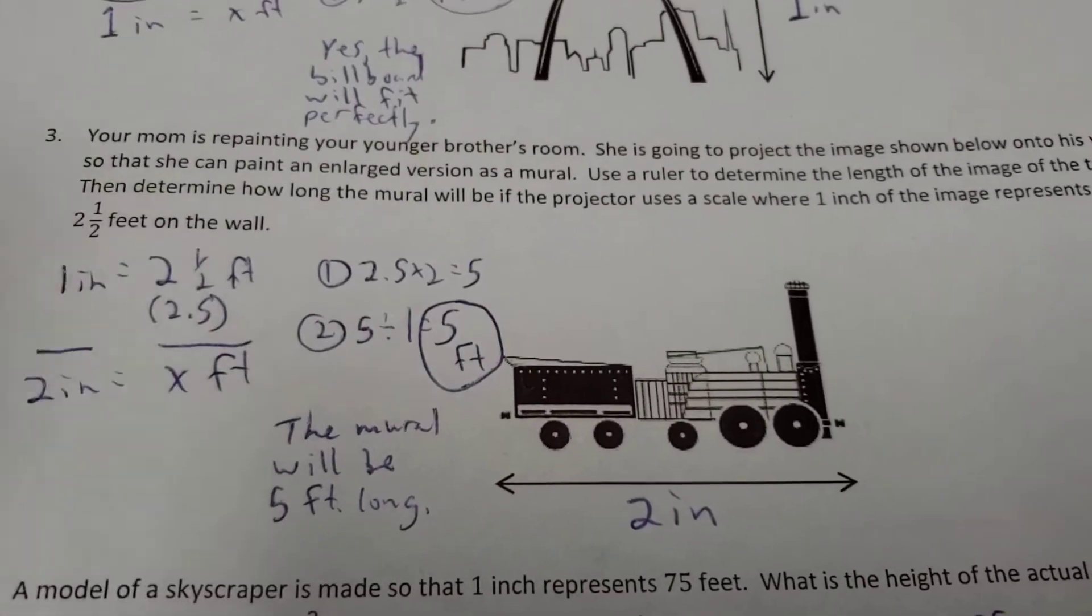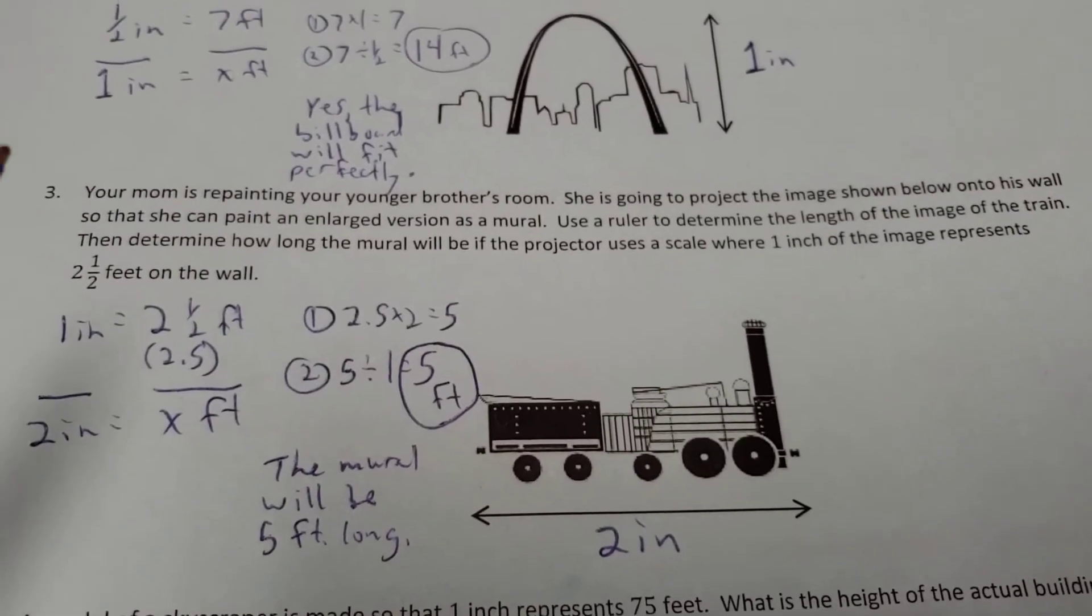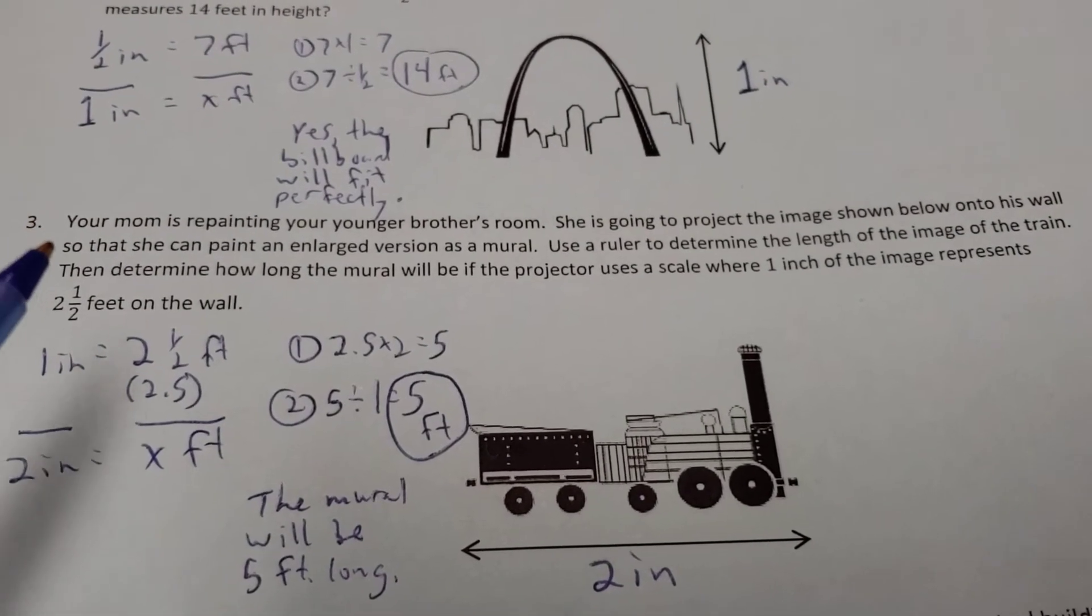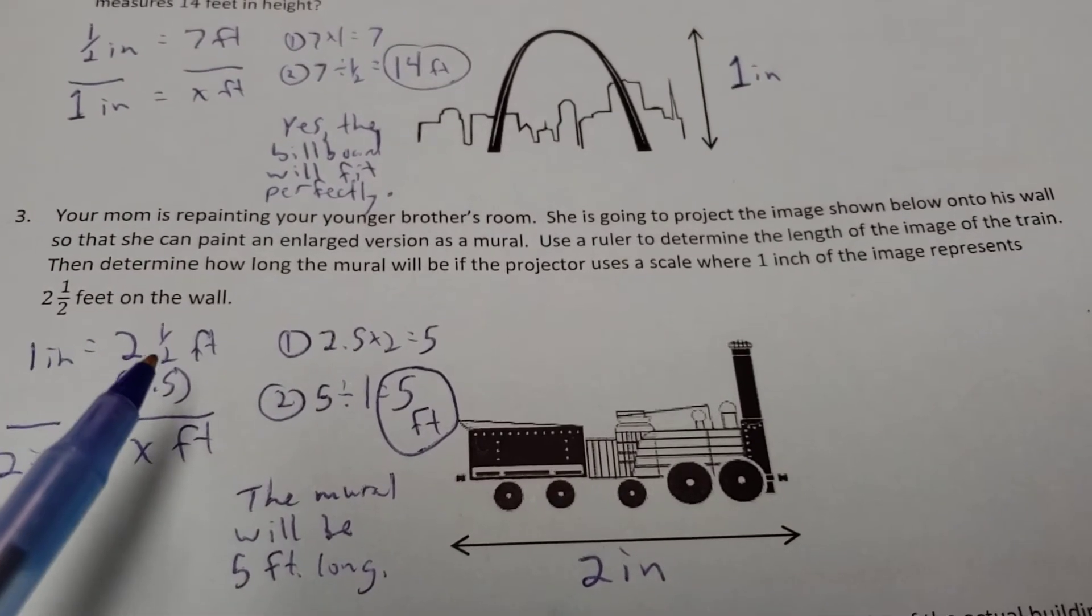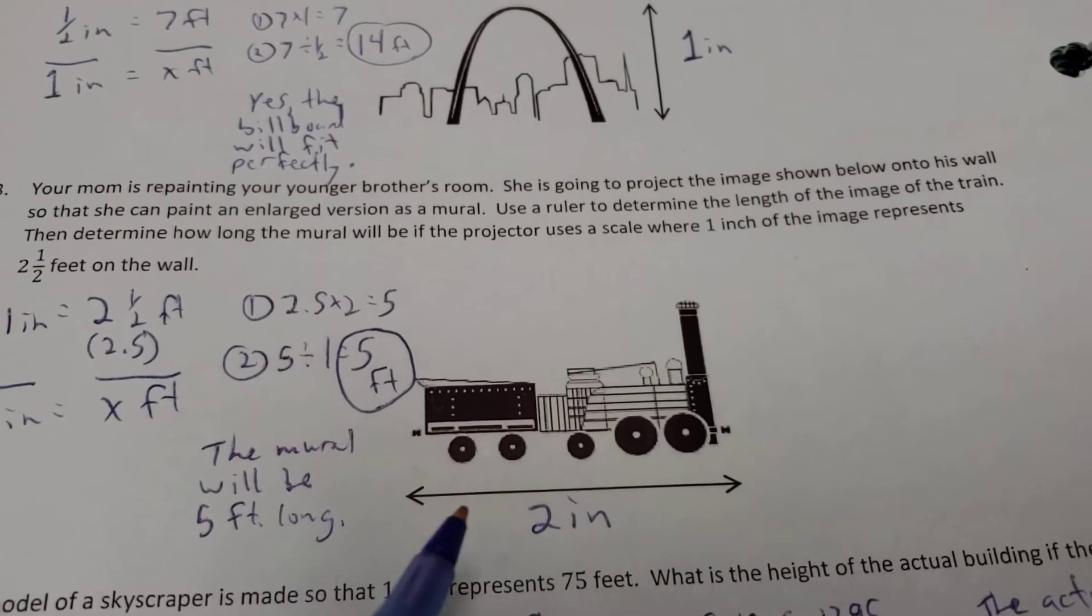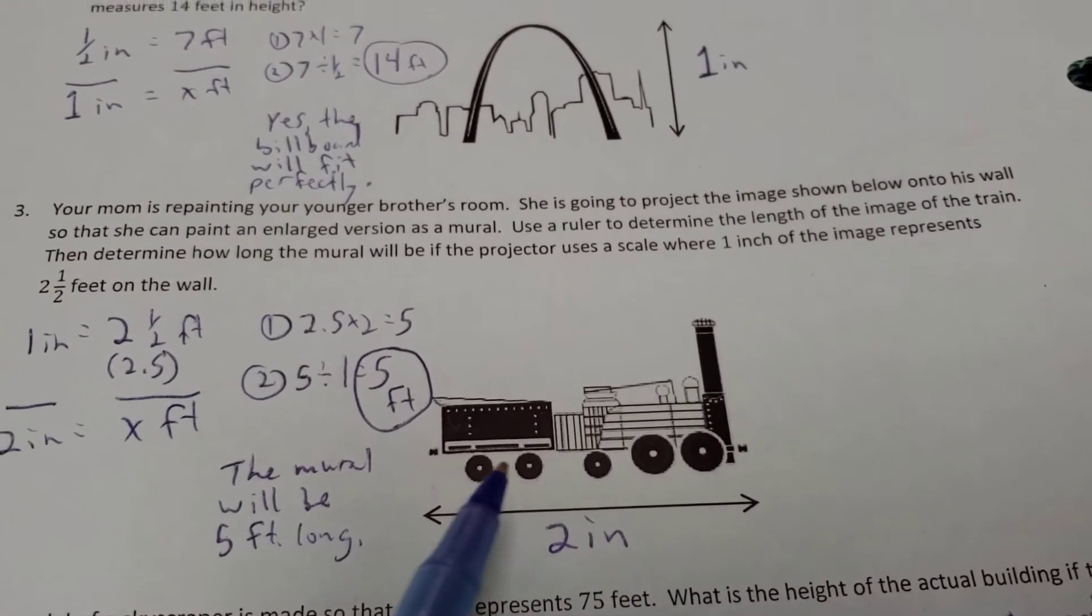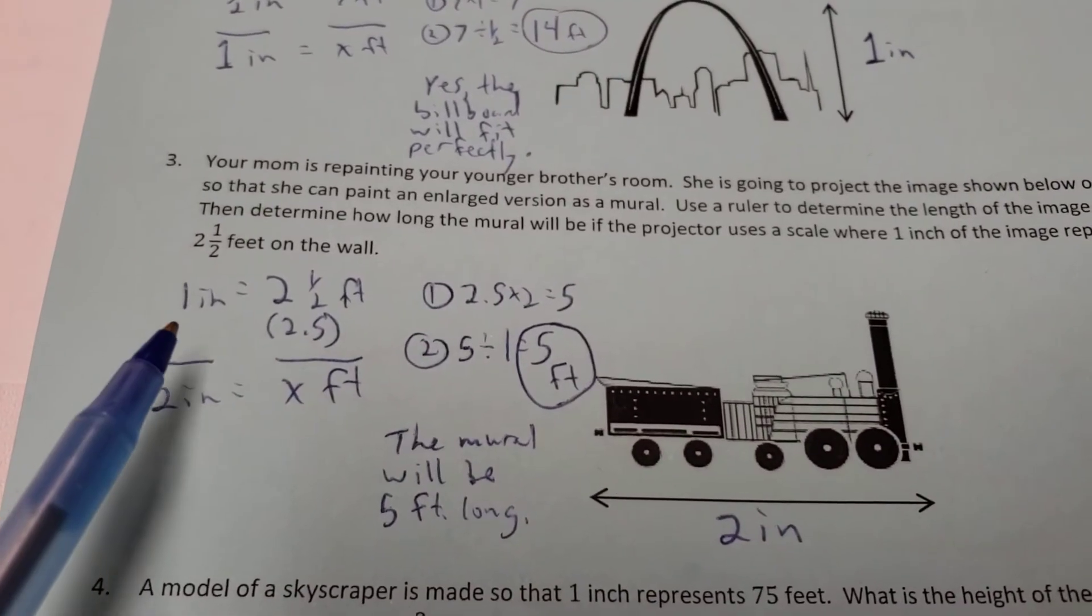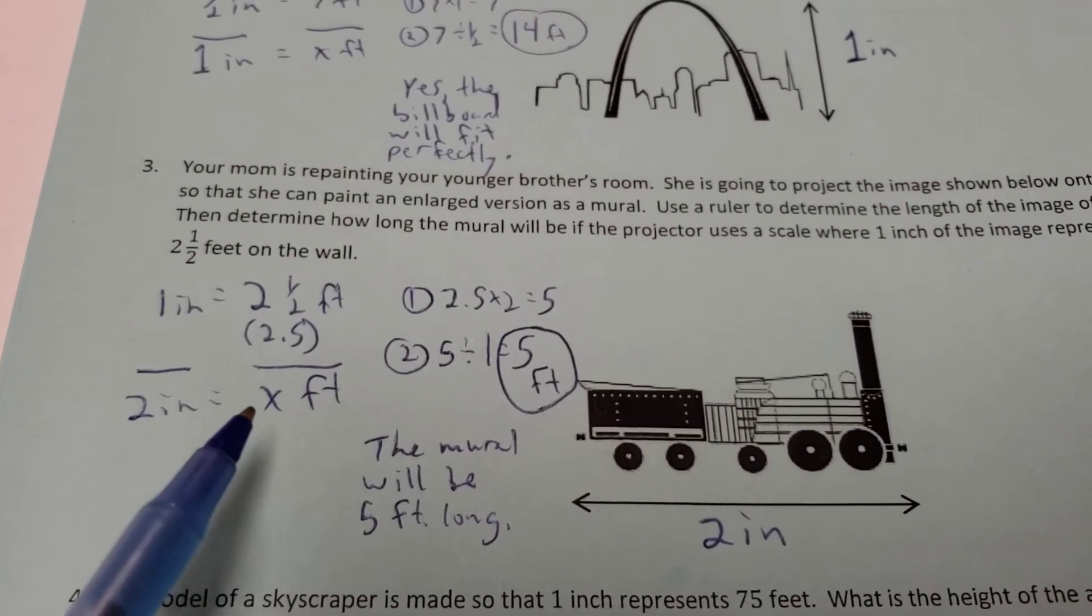Number three. We have a projector. We're trying to put an image on your little brother's wall, where one inch is going to represent two and a half, what we might call 2.5 feet. So in the picture here, this is actually two inches long. So if one inch equals two and a half feet, two inch equals how many?